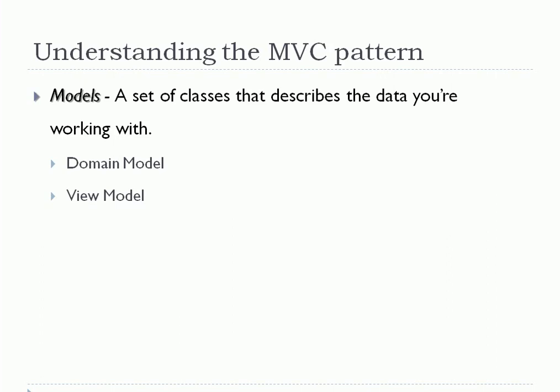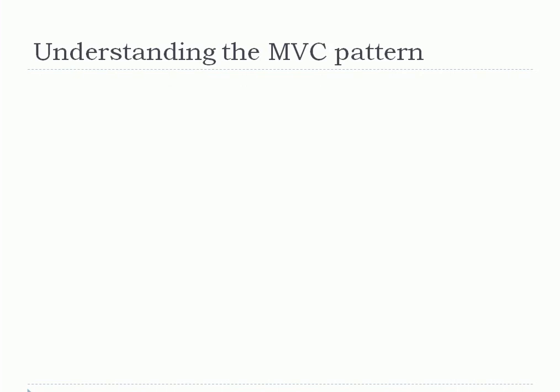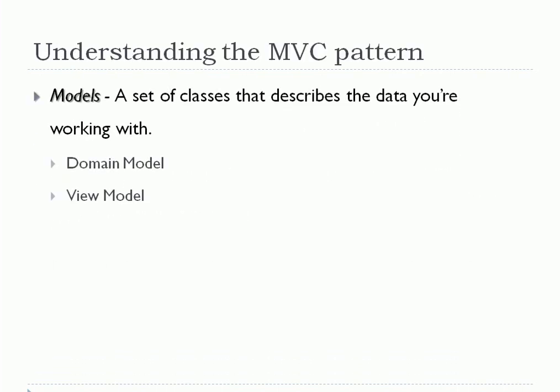When we actually work on a real application, we mainly deal with two types of models — this is a general conceptual classification. The first one is a domain model and the other is a view model. If your model is going to represent a database table, you call it a domain model. If your model represents plain data presented to the user and is not tied to any database table, you call it a view model. In MVC, we basically work with view models, while domain models are created separately in the data access layer.